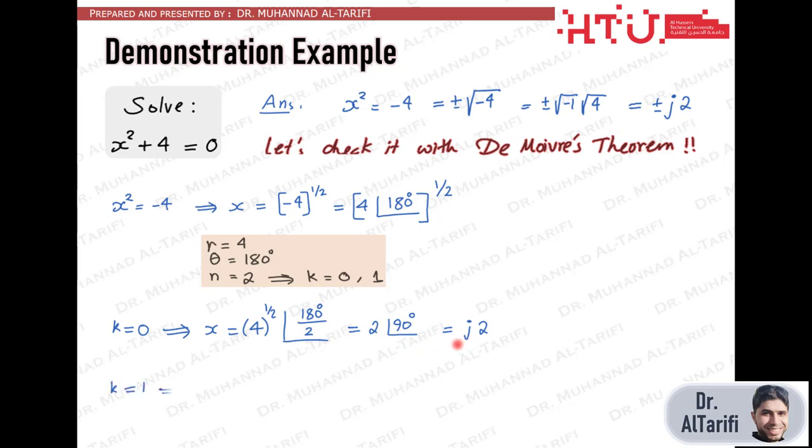With k equals 1 we get the second root with the same magnitude 2 but the phase is theta plus 360 degrees divided by n which is 180 plus 360 divided by 2 or 270 degrees. So this second root is 2 at the phase of 270 degrees or minus j2. These two root solutions are exactly what we were expecting.